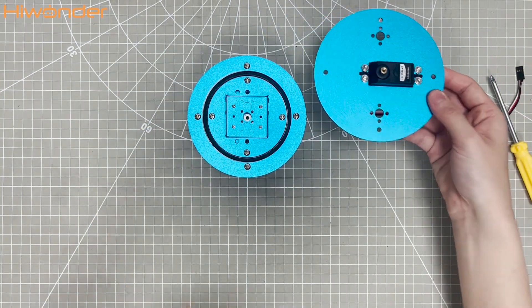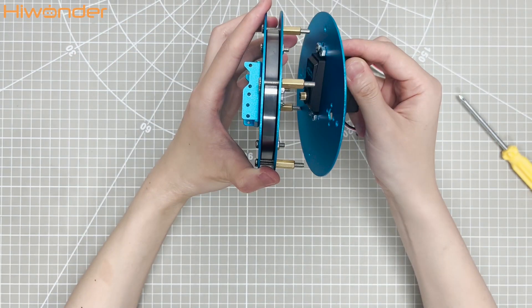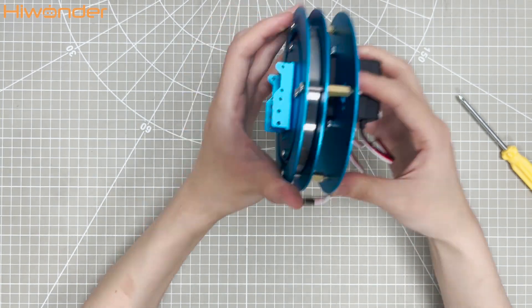Once that's done, install this component to the big round bracket with single pass copper columns. Ensure that the servo gear aligns with the servo horn.